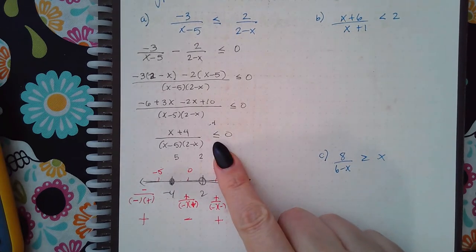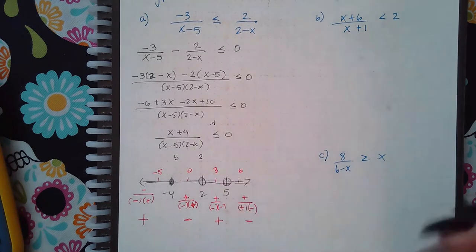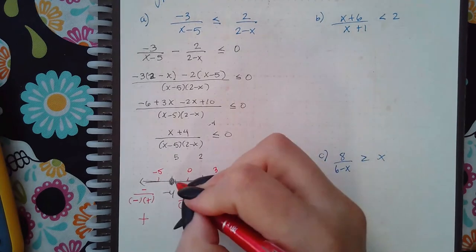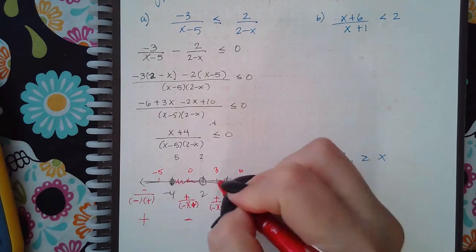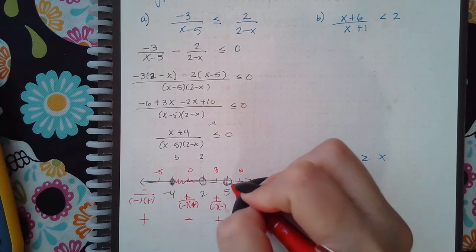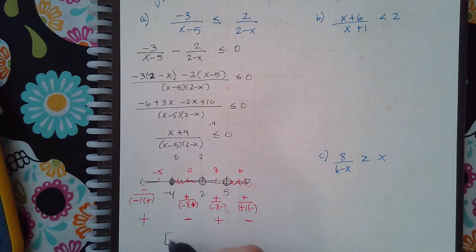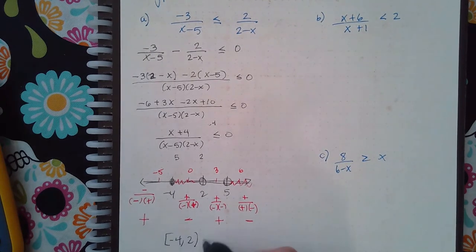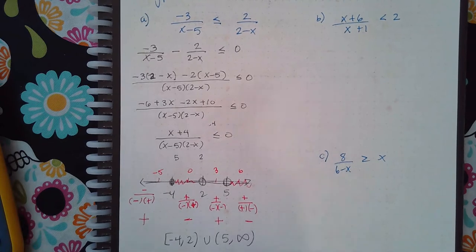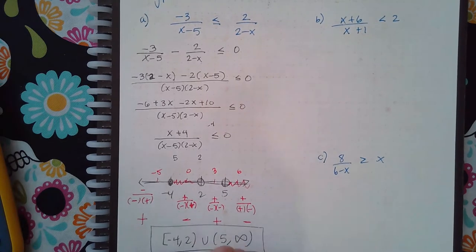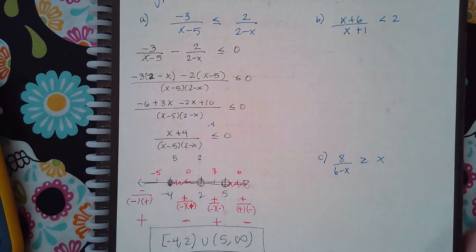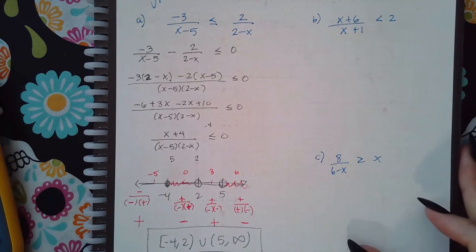We're looking for when it is less than or equal to 0, so we want the two negative sections as our answers. The interval is going to be from negative 4 to 2, and then from 5 to infinity.